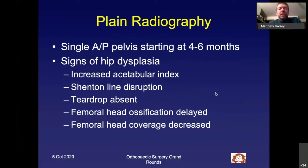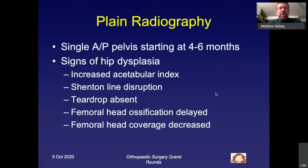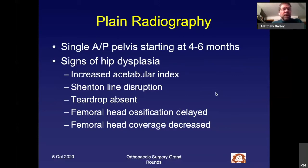At some point, plain radiography becomes the imaging of choice. Some people do this as early as four months; I typically wait until I can see the femoral head, generally at six or seven months — a little later in females than males. Once the femoral head is ossified, it actually blocks ultrasound assessment of the acetabulum, so I transition to plain radiographs. On the plain radiograph you want to assess the acetabular index, look for Shenton's line disruption, evaluate presence or absence of the teardrop, and note any delay in femoral head ossification or poor femoral head coverage.